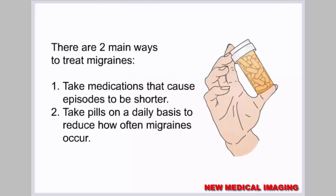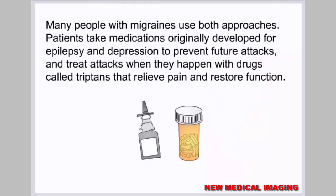There are two main ways to treat migraines. One: take medications that cause episodes to be shorter. Two: take pills on a daily basis to reduce how often migraines occur. Many people with migraines use both approaches. Patients take medications originally developed for epilepsy and depression to prevent future attacks, and treat attacks when they happen with drugs called triptans that relieve pain and restore function.